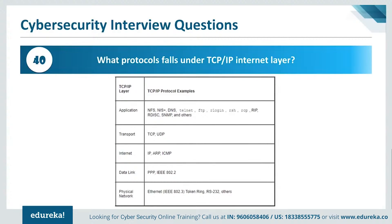The transport layer has two main protocols: TCP and UDP. Last but not least, the application layer is governed by multiple protocols, namely NFS, NIS+, DNS, Telnet, FTP, RIP, SNMP, and various other protocols.